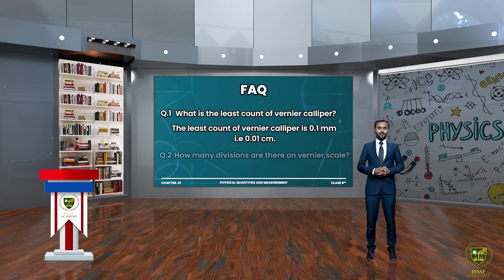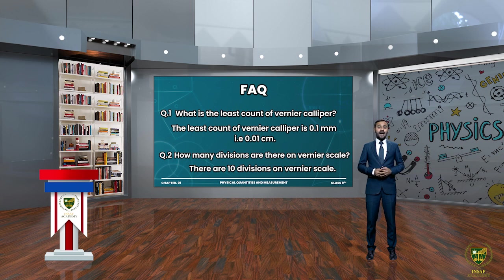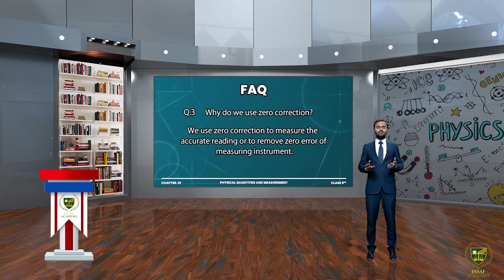Another question: How many divisions are there on the Vernier scale? There are 10 divisions on the Vernier scale. Another question: Why do we use zero correction? We use zero correction to measure the accurate reading, or to remove the zero error of the measuring instrument.